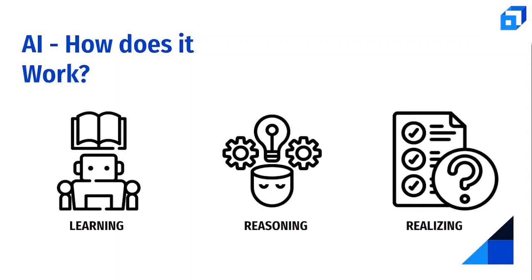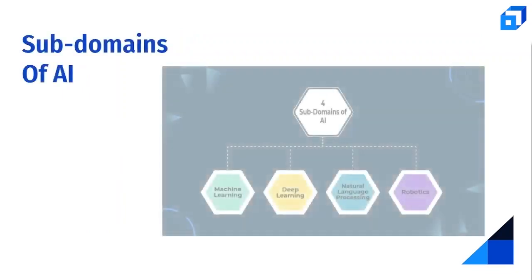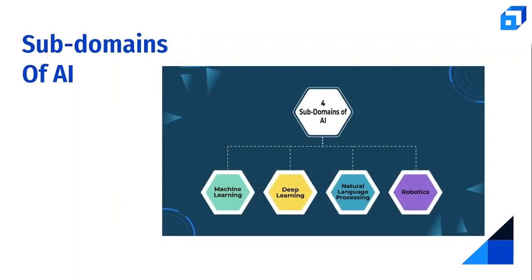AI emphasizes three human-like behaviors: learning, reasoning, and realizing. In the learning stage, the focus is on acquiring data and making rules or algorithms to turn that data into something useful. In the reasoning stage, the best algorithm for the task is chosen. In the realizing stage, algorithms are trained repeatedly with the right data to ensure accurate predictions and important decisions.